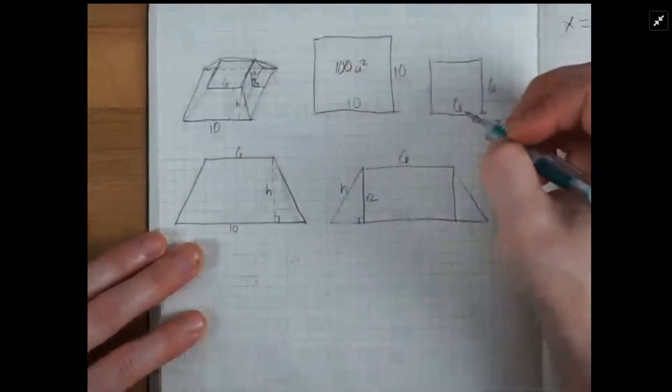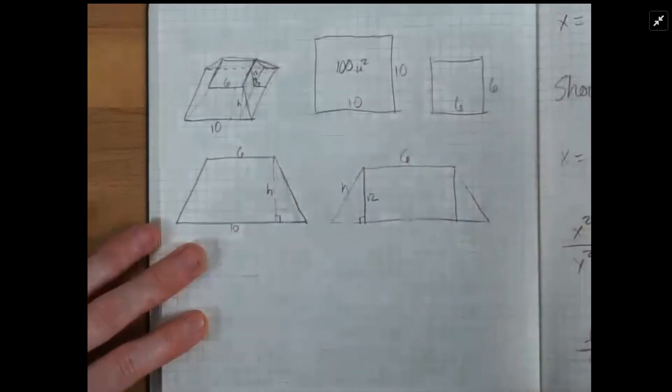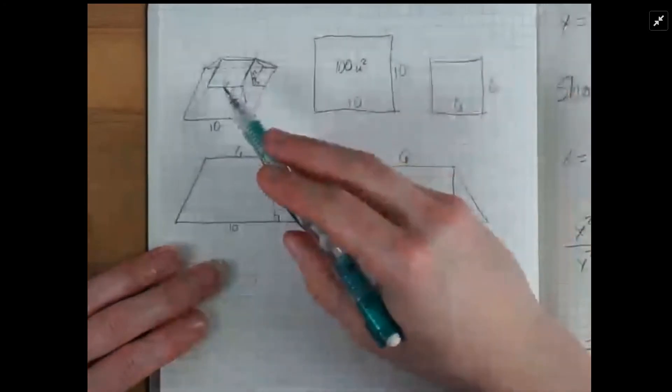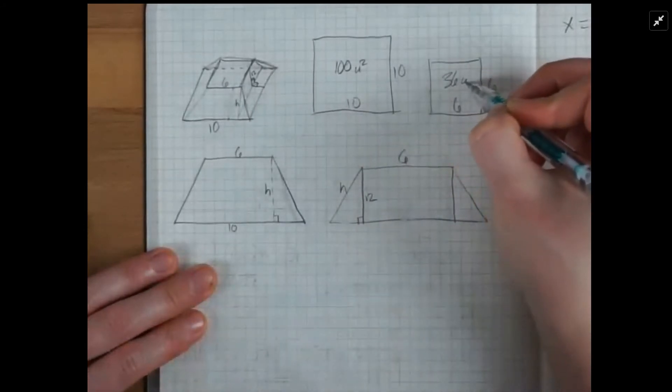And I'll just call it 100 square area units, surface area units rather. And then the top square is 6 by 6, so 36 units squared.